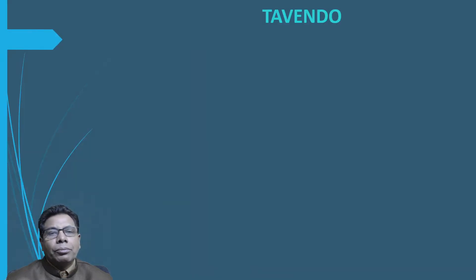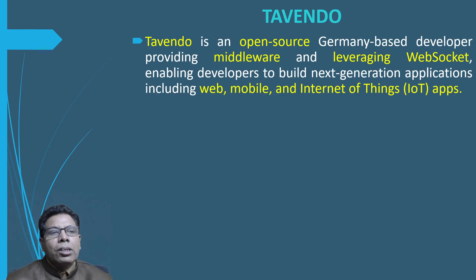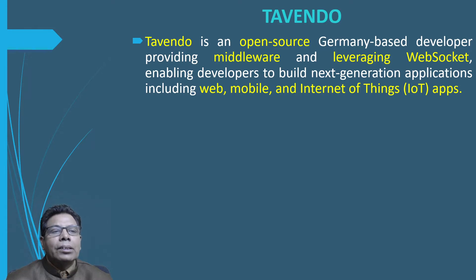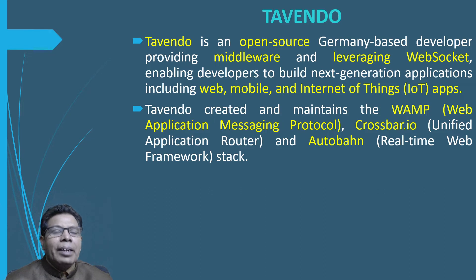Tevendo is an open source Germany-based developer providing middleware and leveraging web sockets, enabling developers to build next generation applications including web, mobile, and Internet of Things apps. Tevendo created and maintains the web application messaging protocol, Crossbar IoT — a unified application router — and Autobahn, which is a real-time web framework.